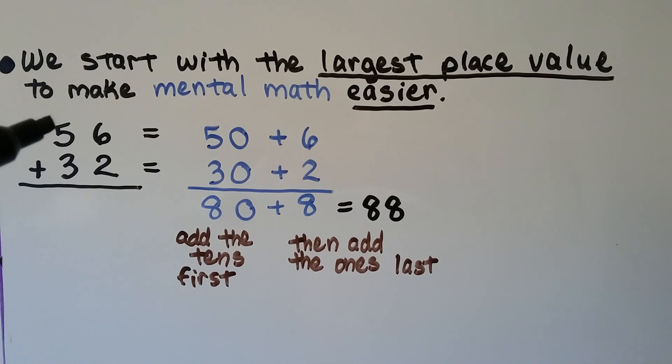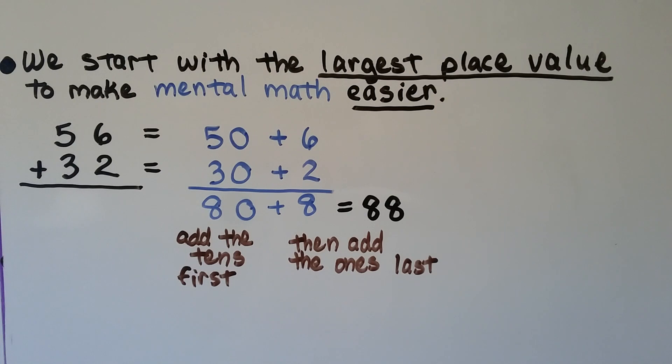If we need to add 56 plus 32, we add the 50 and the 30 and get an 80. Then we add the 6 plus 2, which is 8, and we get 88. We added the tens first and the ones last. It's very different than doing it on paper. We're starting with the largest place value.